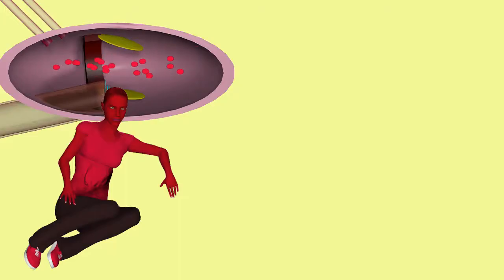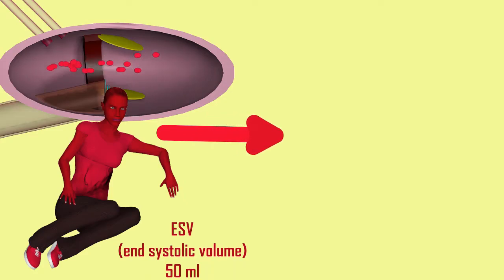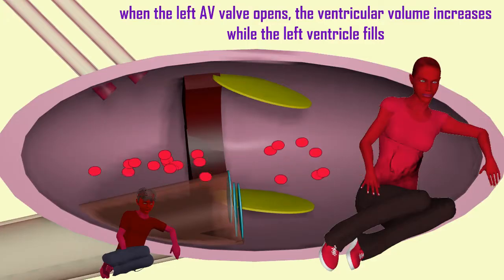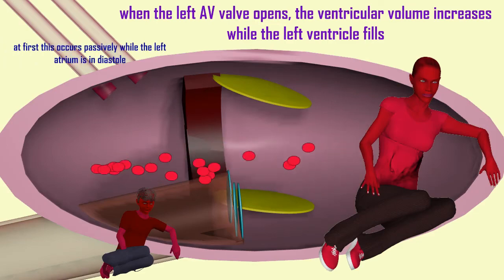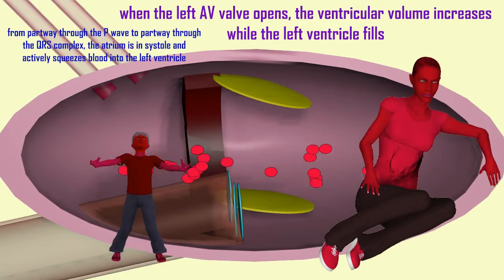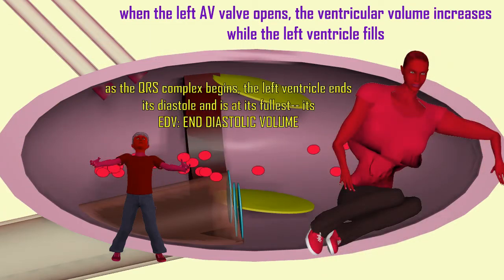In the same way, left ventricle woman is relatively empty at the end of the systole of the previous cardiac cycle. Her end systolic volume of perhaps 50 milliliters is as empty as she gets. But once the bicuspid AV valve opens, blood rushes into the left ventricle and it begins to fill. At the end of the left ventricle's diastole, it reaches its greatest volume — its end diastolic volume — with perhaps 120 milliliters of blood.